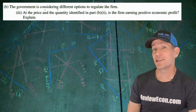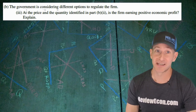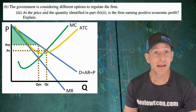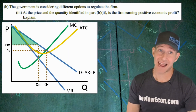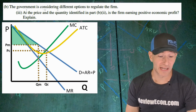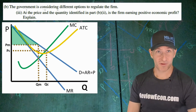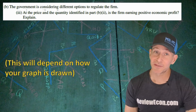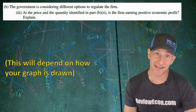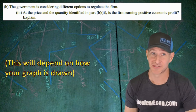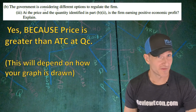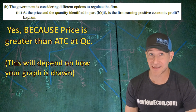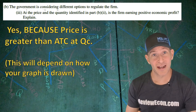For part B triple I, we need to explain if this firm is earning an economic profit once the price ceiling has been imposed. Looking at the graph at the quantity of QC, PC is greater than the average total cost at that quantity, which means this firm is still earning economic profit — the price is high and the ATC is low at QC. This answer depends on how you drew your graph and the relationship between PC and ATC at QC, but based on the way the graph is drawn here, yes, the firm is earning economic profit because price is greater than ATC at QC.